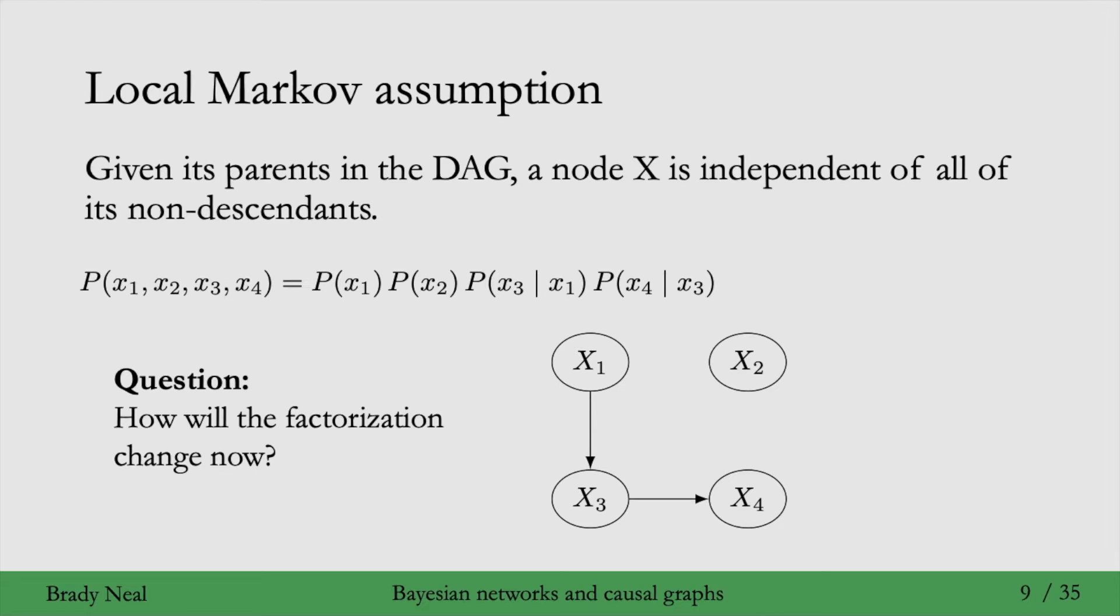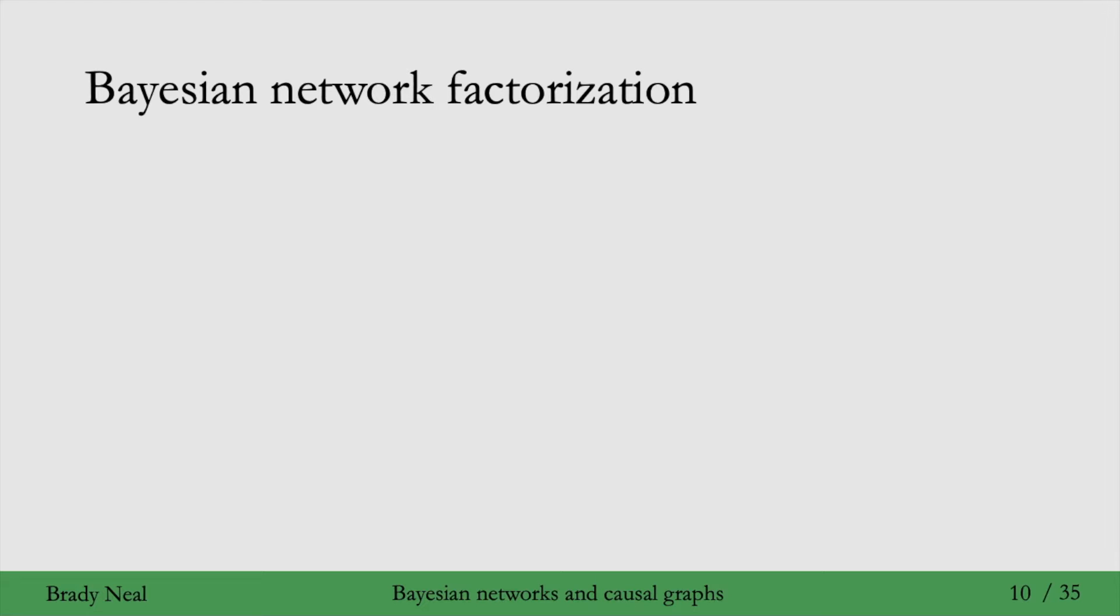And we give this example to build up your intuition for a more general concept known as the Bayesian network factorization, which is the following. The joint distribution factorizes as the product of factors where there's one factor for each variable, and each factor is just the probability of that variable conditioned on its parents in the graph.